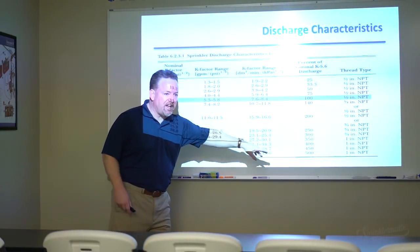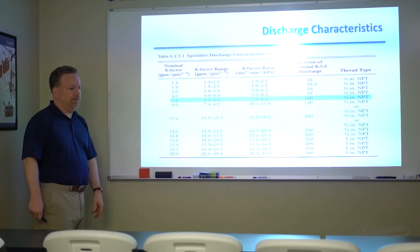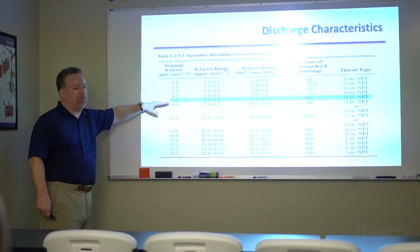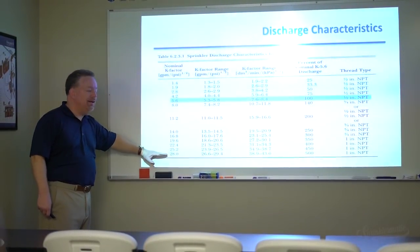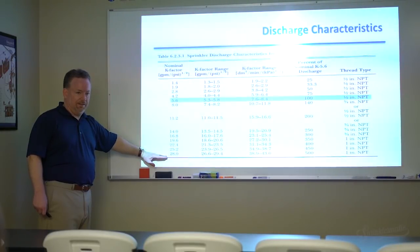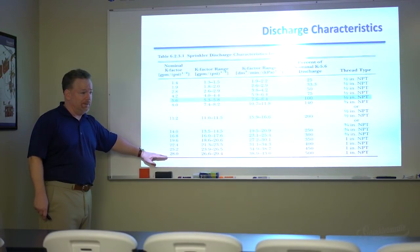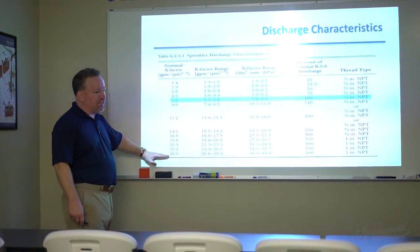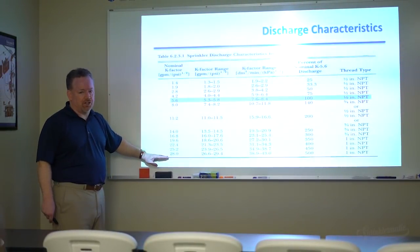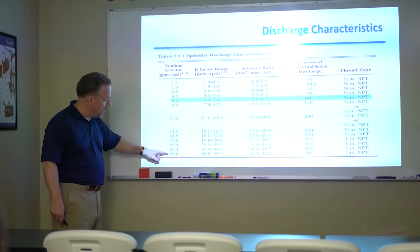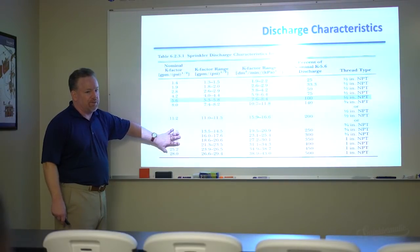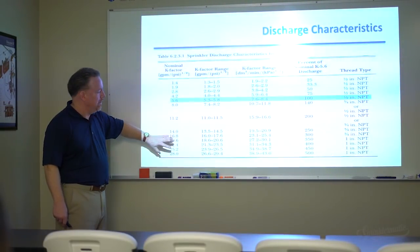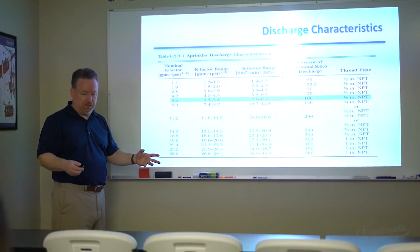A very large orifice K 28 can flow five times the amount of water compared to a K 5.6. These larger K factor sprinklers — used for high-challenge storage type fires — can deliver around 80 to 100 gallons per minute, which is basically a small hose stream. We also have smaller orifice sprinklers that are designed to deliver an equal amount of water with a smaller K factor at the same pressure.